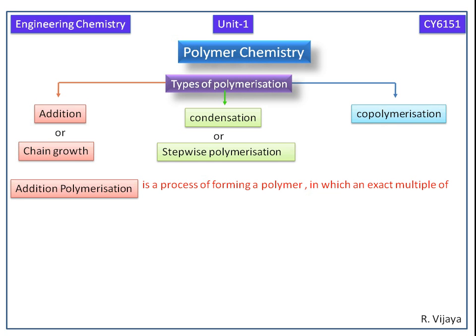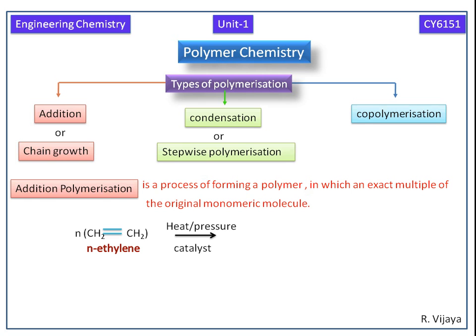Addition polymerization is a process of forming a polymer in which an exact multiple of the original monomeric molecule. For example, N number of ethylene molecules undergoes polymerization in the presence of a catalyst at a particular temperature and pressure to get polyethylene.